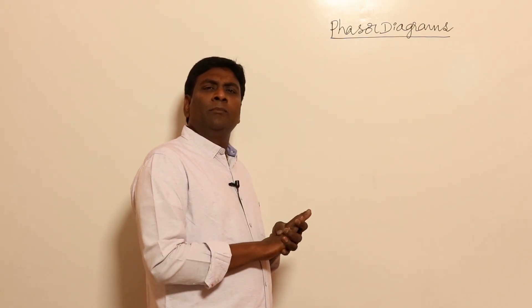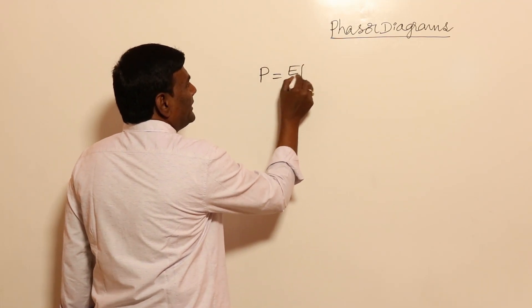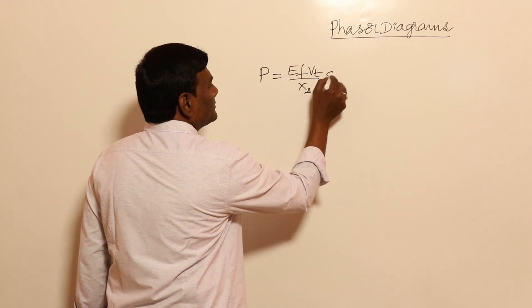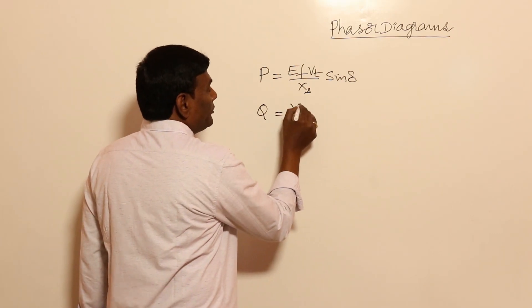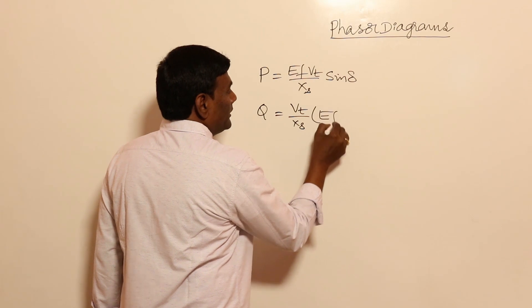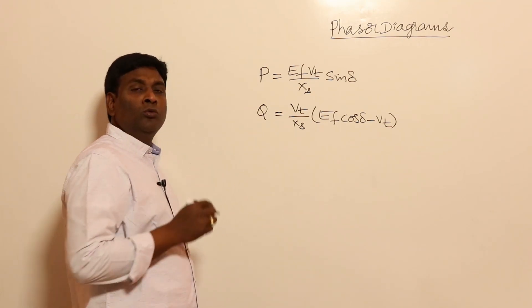In this video let us see phasor diagrams, which are actually very crucial and important. As I said in my previous session, some faculties may consider V and inverted V curves to explain them, but that should not be done for GATE. Problems can be easily solved with the phasor diagram concept only. For example, active power P = Ef·Vt/Xs·sinδ, and reactive power Q output = (Vt/Xs)·(Ef·cosδ − Vt).